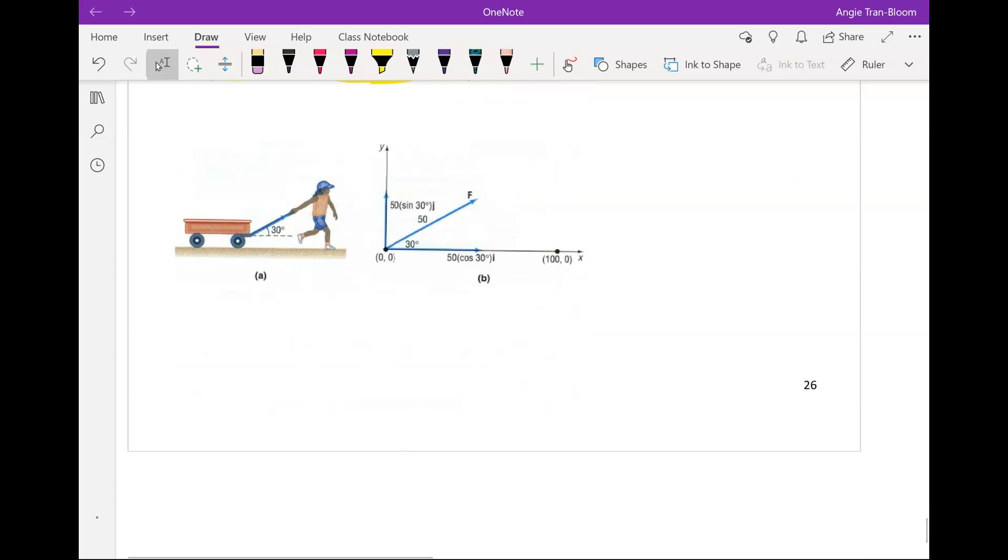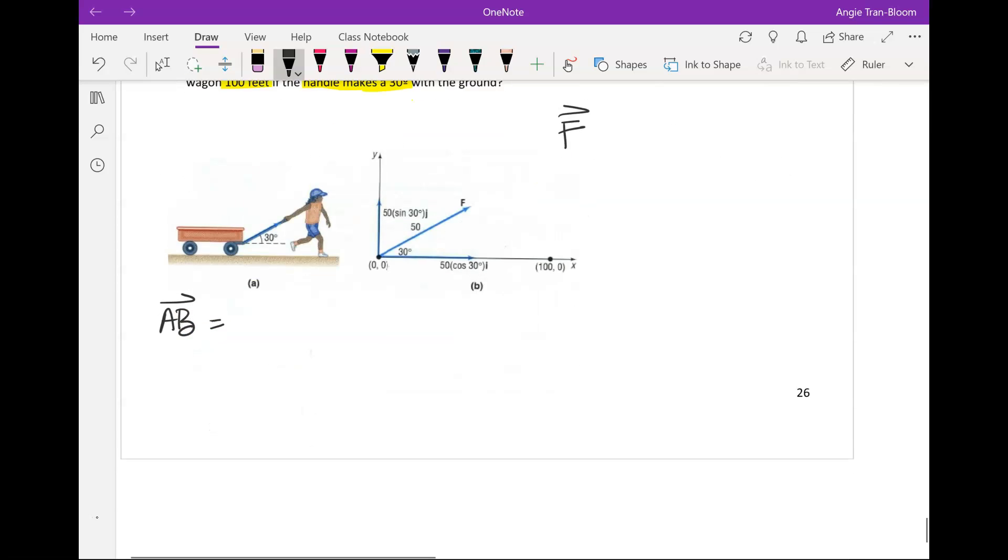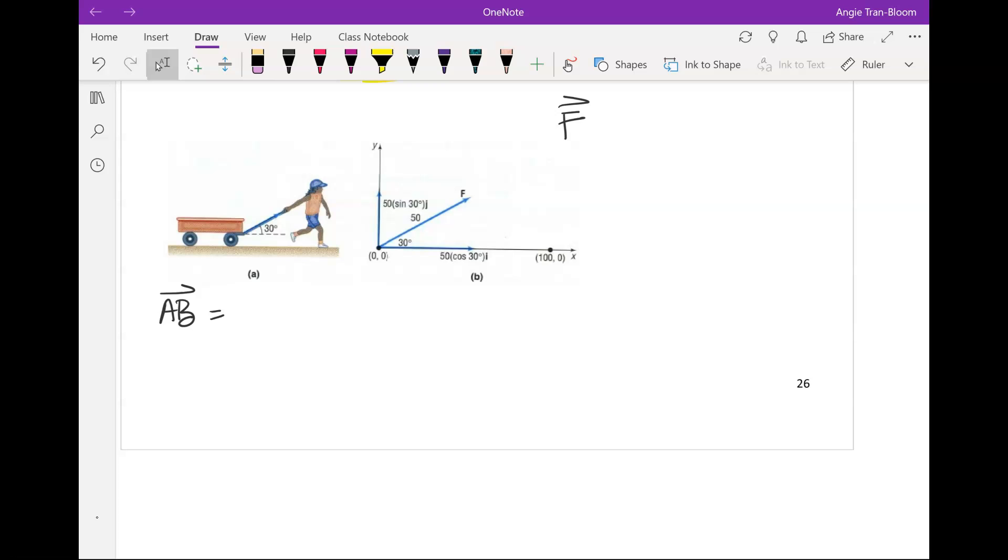So if you look at the drawing, we need to find two things. We need to find the force and we need to find the distance of AB. The distance of AB is pretty easy. She's moving it 100 feet. So if we put her, if her starting point is at the origin, we move it 100 feet horizontally. So that's just 100 and 100i. So that's not too bad.